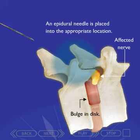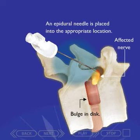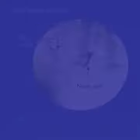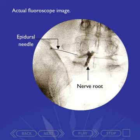An epidural needle is then placed into the appropriate position with the assistance of a fluoroscope, a type of x-ray machine. The fluoroscope assists the physician to precisely place the epidural needle on the affected nerve root.